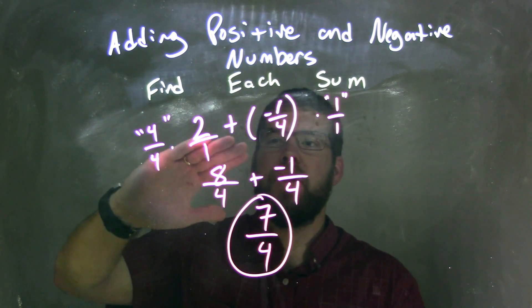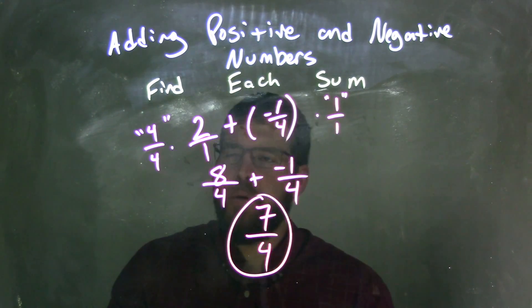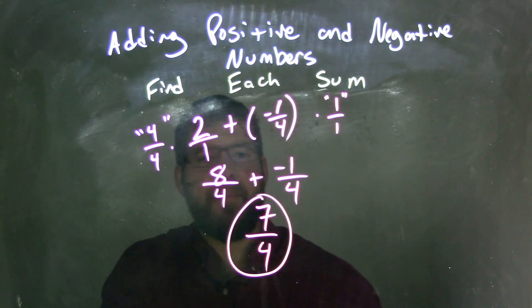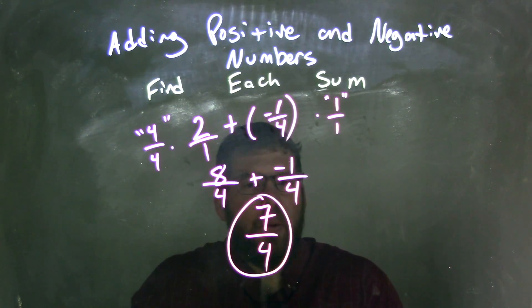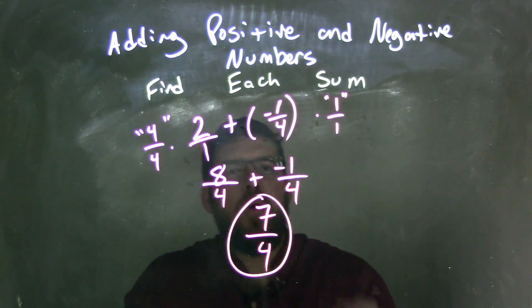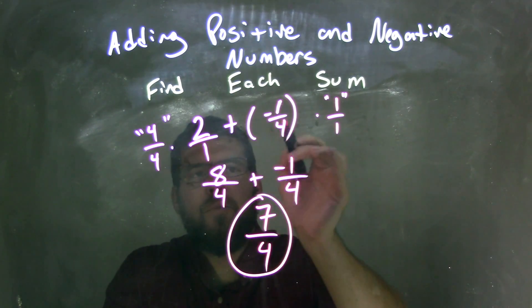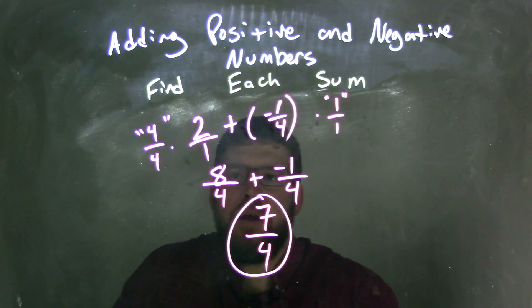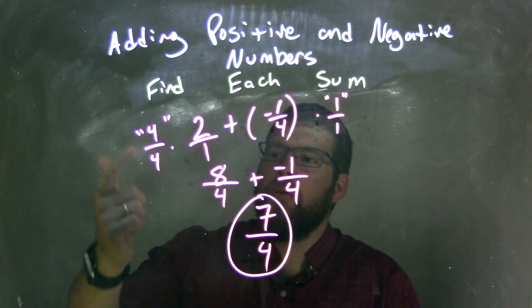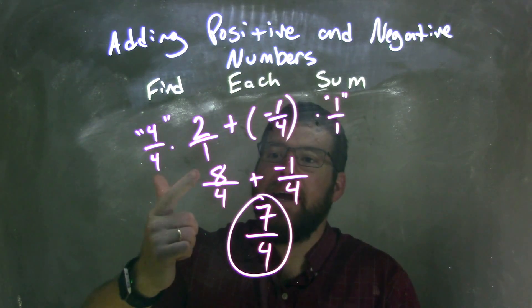So again, let's recap. We started with 2 plus a negative 1 fourth. Well, 2 I can make a fraction as 2 over 1. And now I wanted to find a common denominator. Sometimes that common denominator is one of the fractions base already. 1 and 4 both go into 4, 1 four times, and 4 one time. So we have 4 over 4. We multiply that by 2 over 1, and we've got 8 fourths.